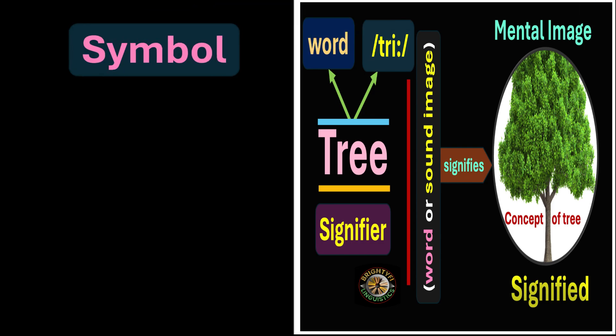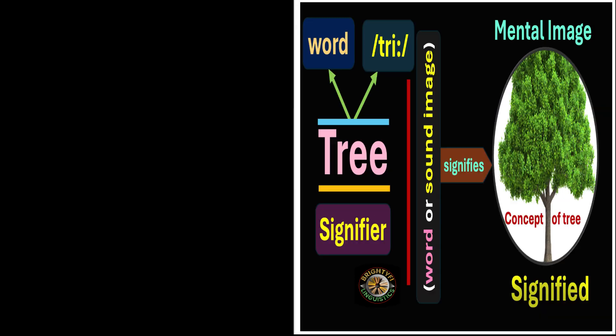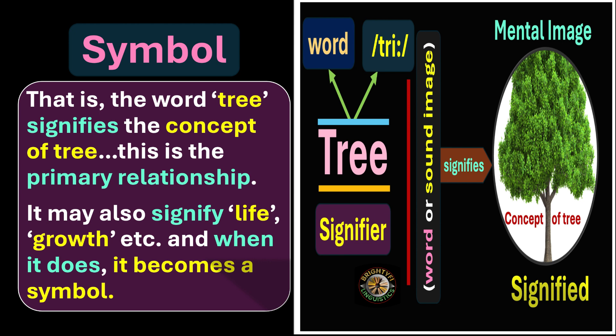Now we have the concept of symbol. A symbol is a kind of sign that signifies several concepts based on the primary relationship between the signifier and the signified. Symbol is also a kind of sign, but a sign gives only one meaning — it conveys what it conveys and does not interpret more than it should. It carries the primary meaning: the word 'tree' means the picture of the tree, that's all. But the symbolic meaning of the tree could have layers of meanings. The word 'tree' may also signify life, growth, and so on — and when it does, it becomes a symbol.